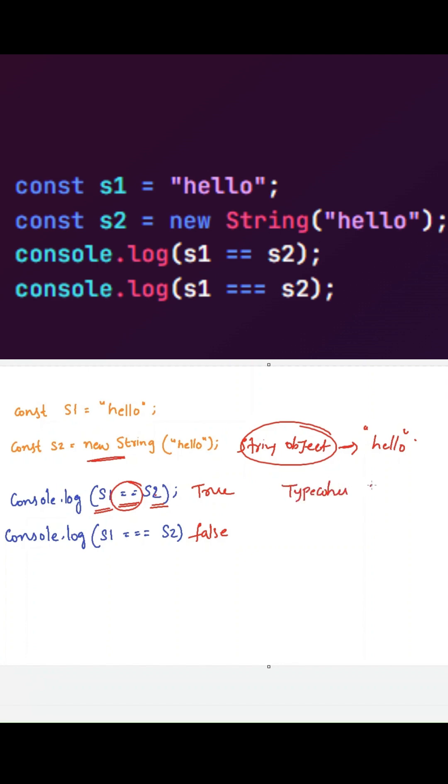So internally, it will use the .toString() method to convert this object into a string. So internally, it will hold the value of string hello now. So both S1 and S2 will have the same value. So it will return true to us.